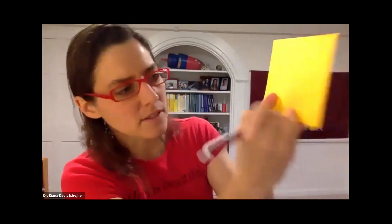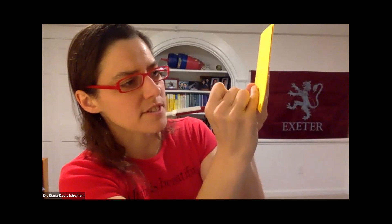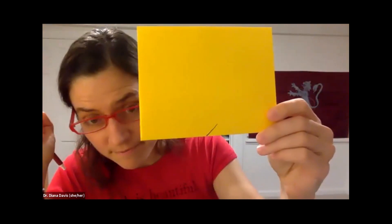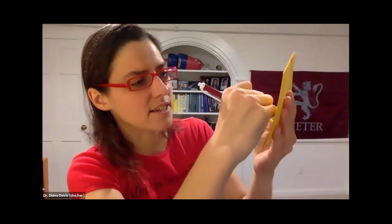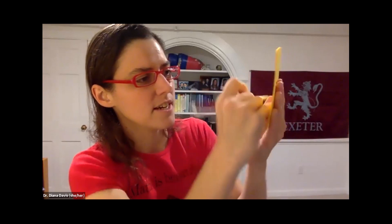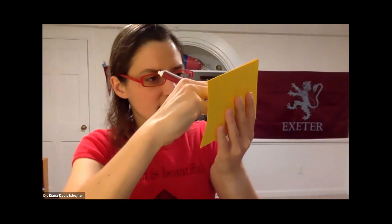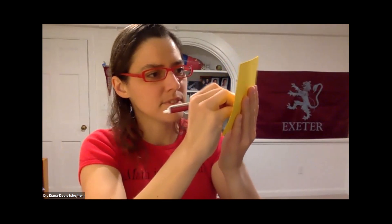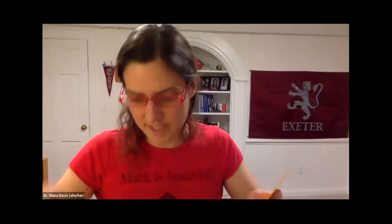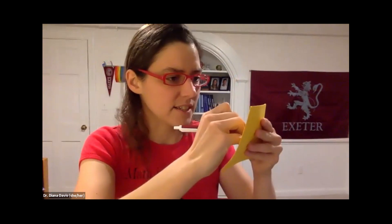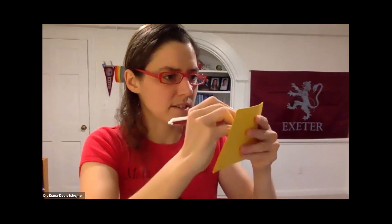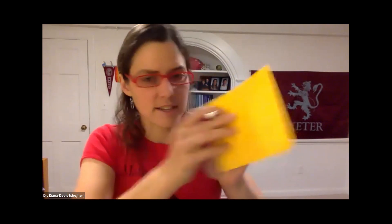Now draw a zigzag up from somewhere near the middle. Draw a line at roughly 45 degrees — it obviously doesn't have to be perfect. Make a zigzag: 45 degrees up in one direction, then 45 degrees up in the other direction, and keep it going. I would say about six is a good number, but if you want to be an overachiever, you can make tiny little zigzags and make a lot of them. It's pretty robust as a design system. There — I made my zigzags.